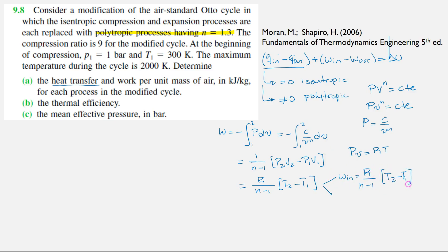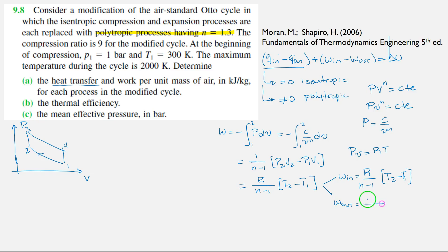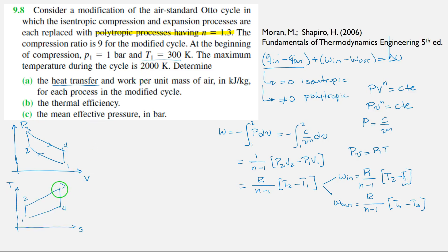If we remember that our process looks like this, work-in is in the compression process and work-out is in the expansion process. From the data we know that T1 is 300 Kelvin. And we know the maximum temperature of the cycle is T3. If we draw this on a T-S diagram, we recognize that T3 is the maximum temperature. So that means we also know T3.